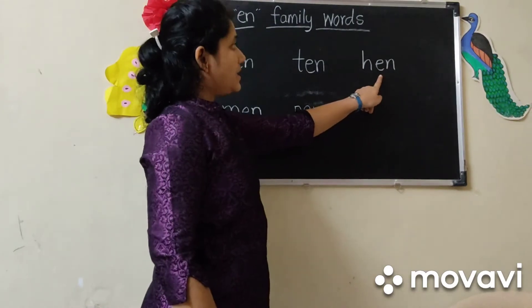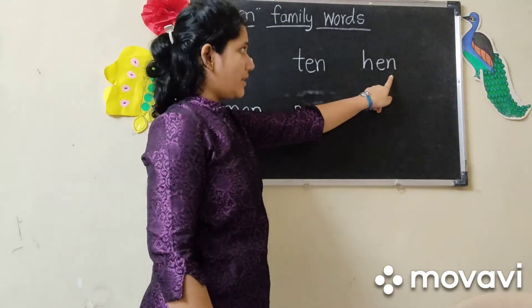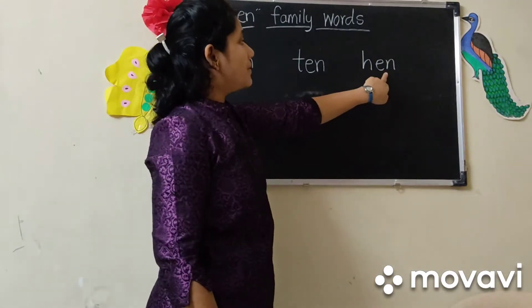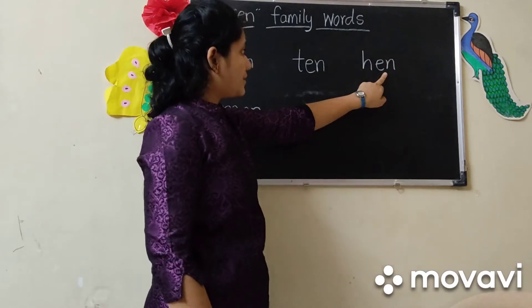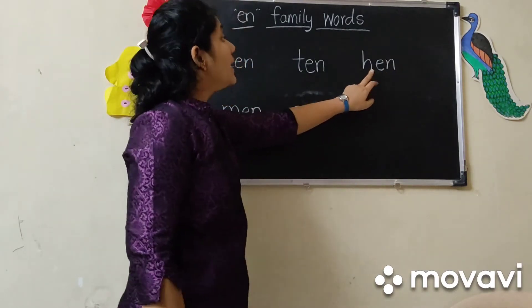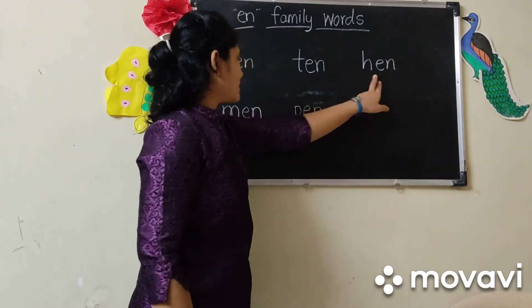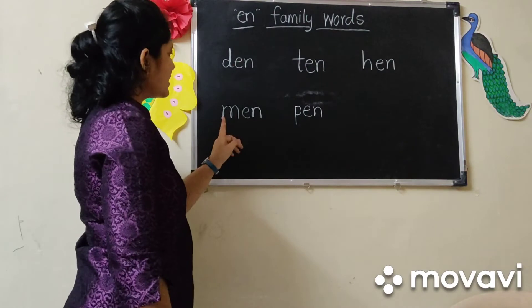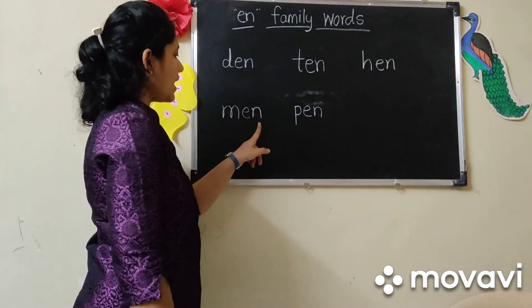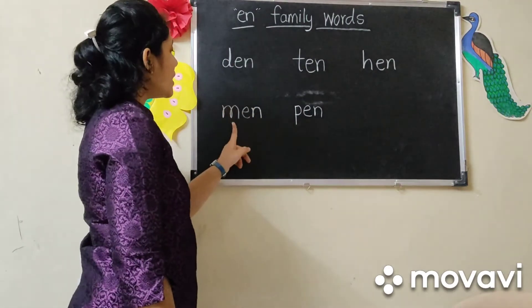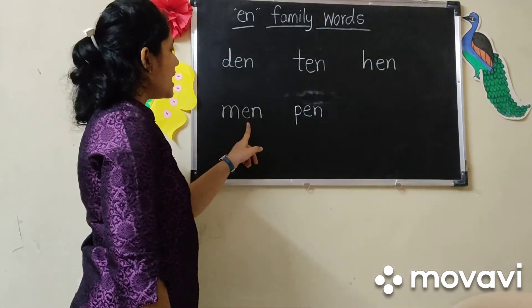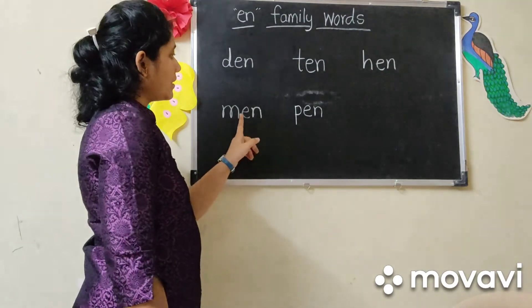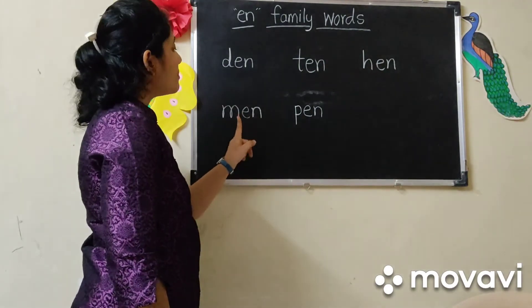H, E, N — Hen. Say with me: Hen. Very good. Next word is M, E, N — Men. Okay? Men.